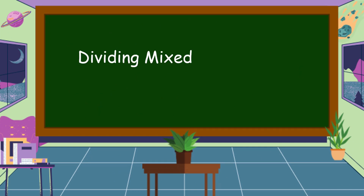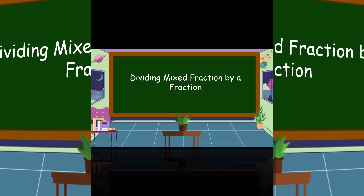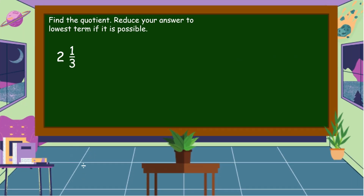Next na pag-aaralan natin ay dividing mixed fraction by a fraction. Two and one-third divided by two-fifths. Ang una natin gagawin dito is gagawin natin improper fraction ang ating mixed number. Itong denominator na three, i-multiply natin sa whole number two. Three times two — ang sagot natin dyan ay ipa-plus naman natin sa ating numerator na one. Three times two is equal to six. Six plus one is equal to seven. Tapos, kukopyahin natin ang denominator na three.